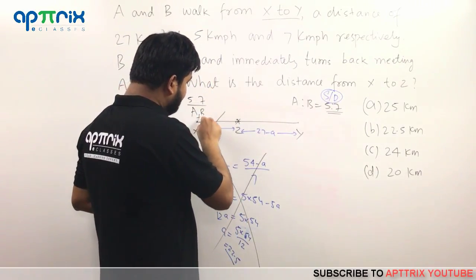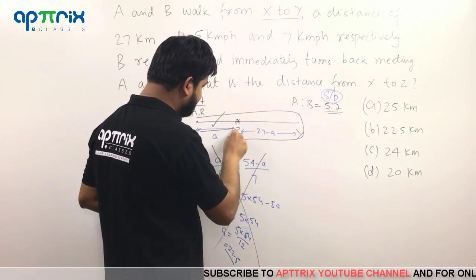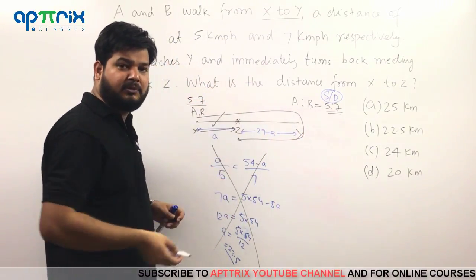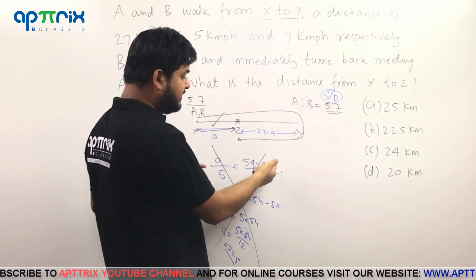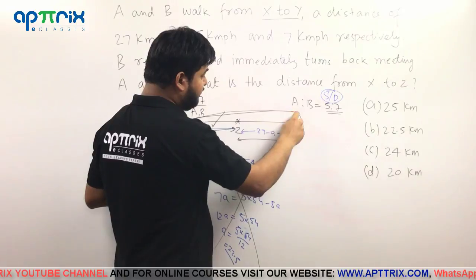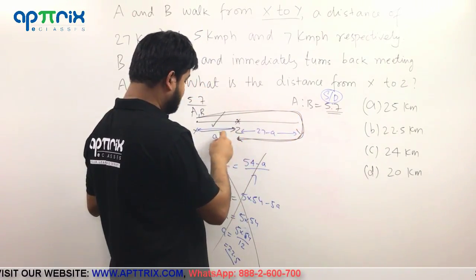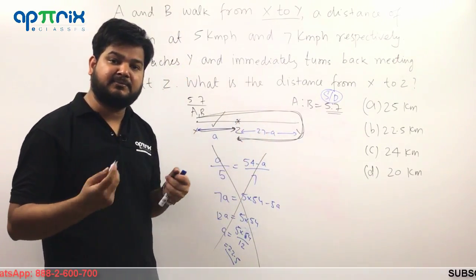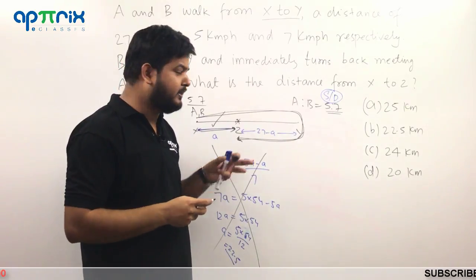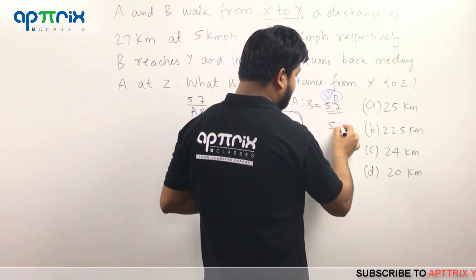Just see. B has covered this much distance, right? And A has covered this much distance. If you sum total it, it is going to be double of this distance. Very simple, right? Look here. B has gone from here to here and it came back at this point. So this is the distance covered by B in this process. While A is covering this distance, total will be what? 27 times 2. You can visualize it mentally. You need not to draw the stack down for that. So total distance you got to know is going to be 54.